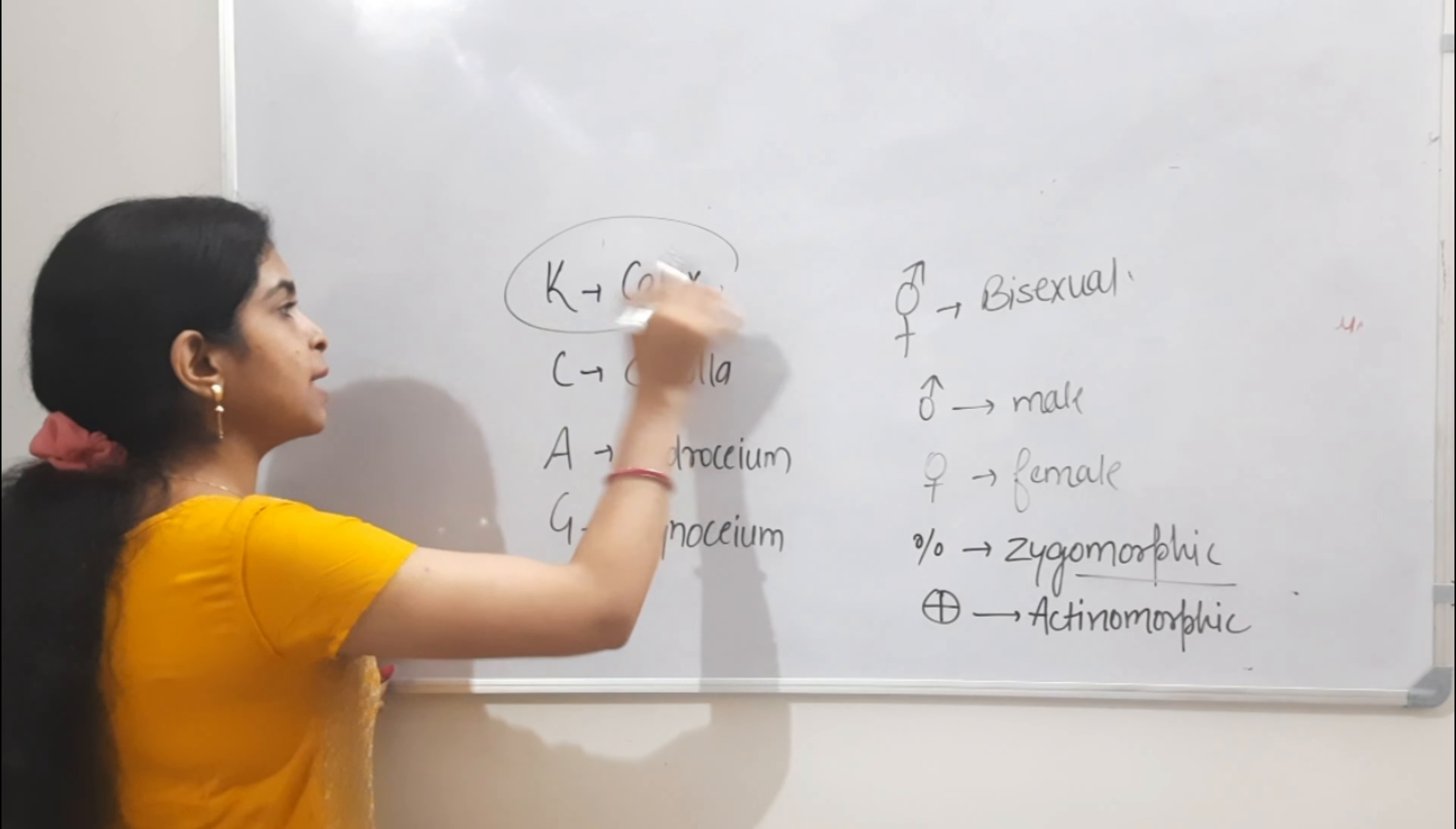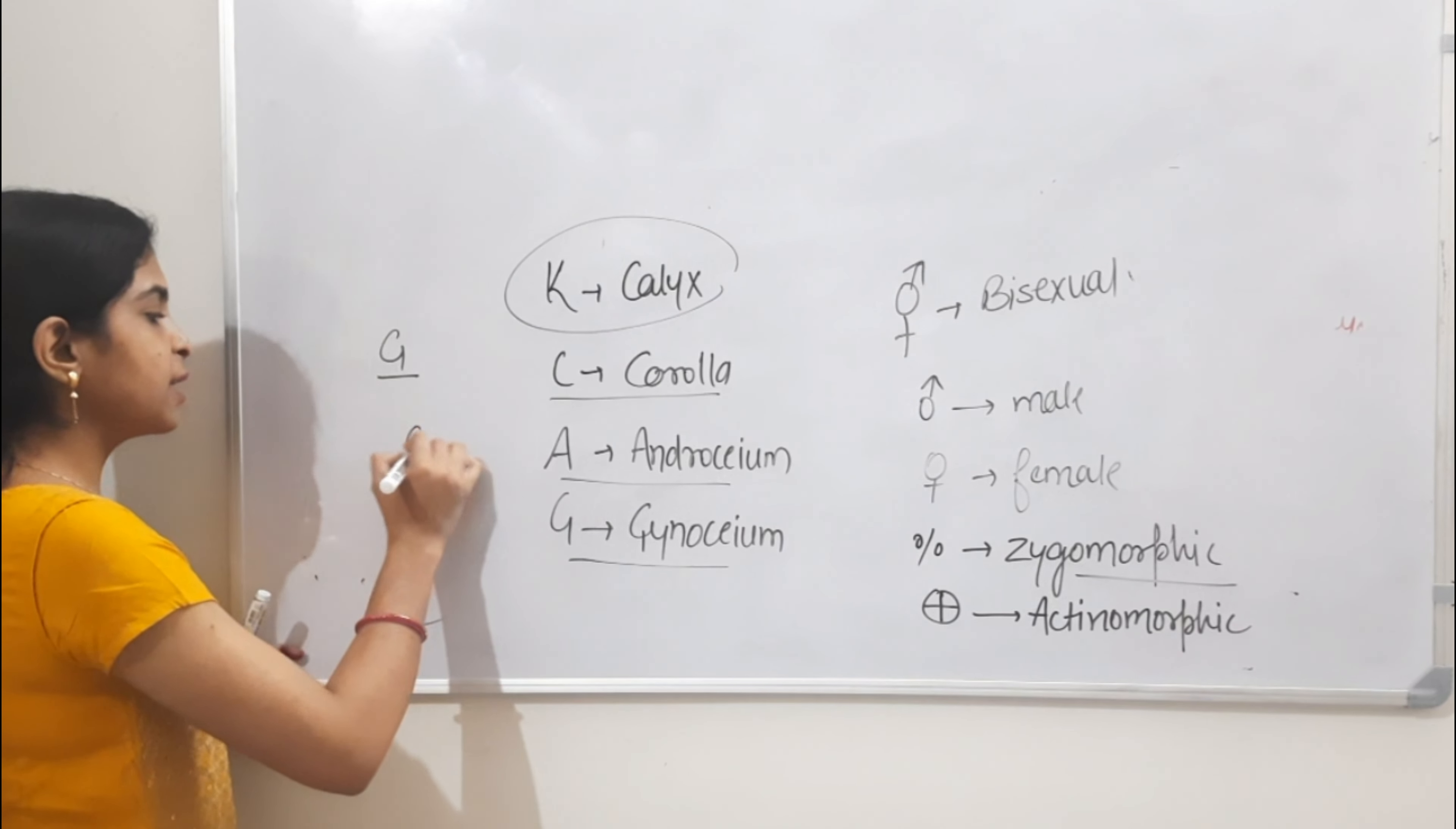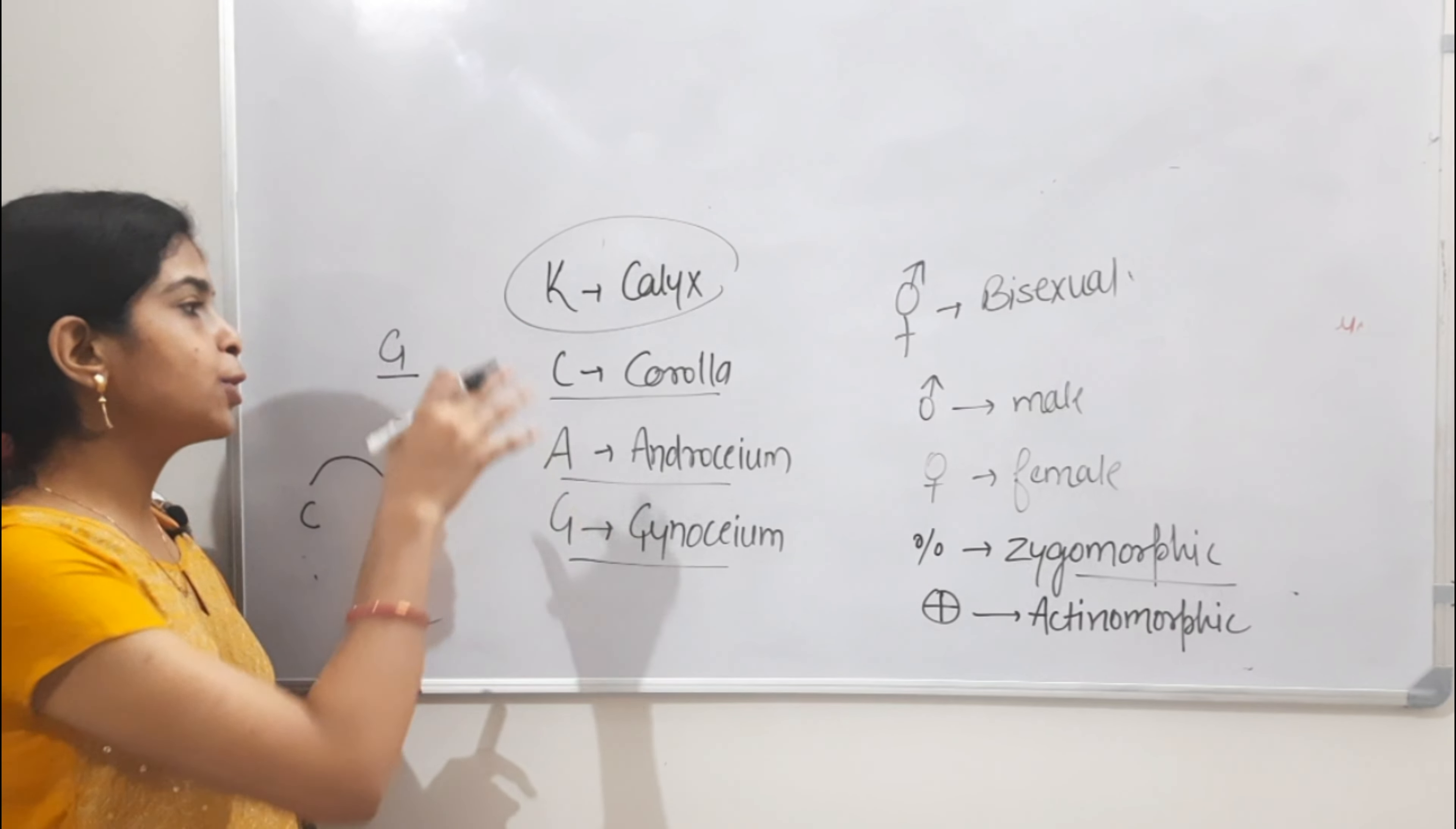The outermost is calyx, then corolla, then androecium, then gynosium. If we write the gynosium like this below, it's superior ovary. If we write the gynosium like this and put it on top, we call it inferior ovary. If we show the gynosium attached to the corolla, then it's half-inferior.